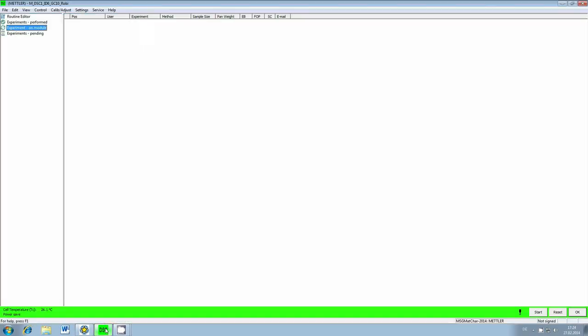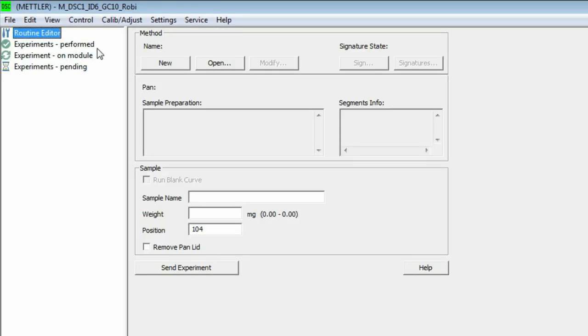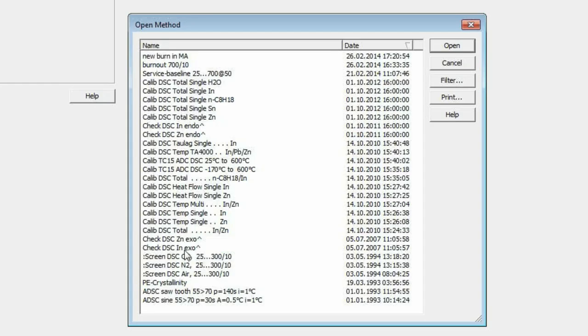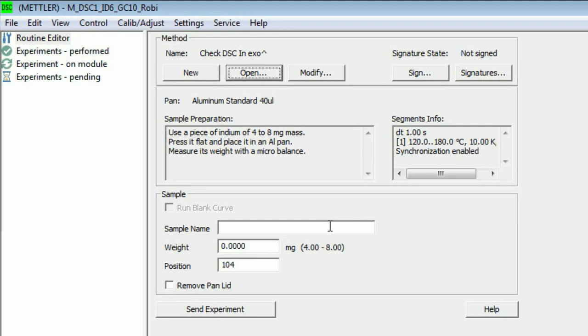In the module window, go to the routine editor. Open the method check DSC indium exo up. Enter the sample name.